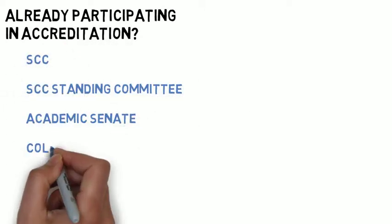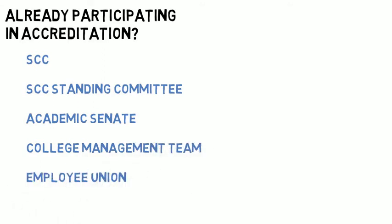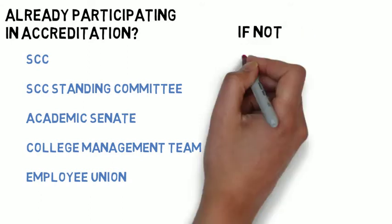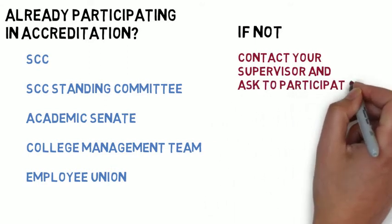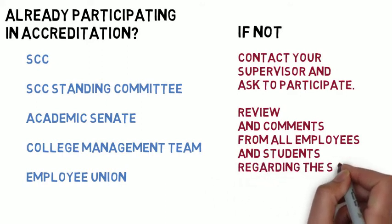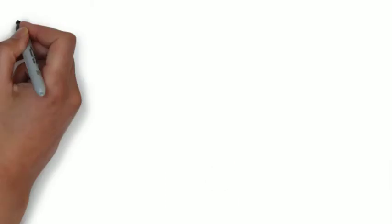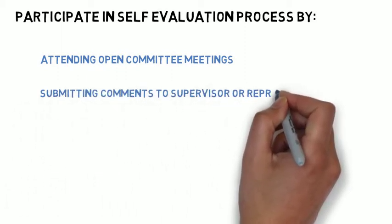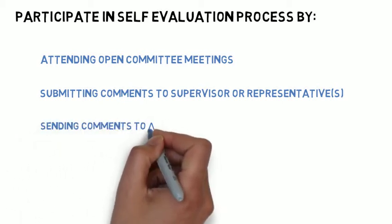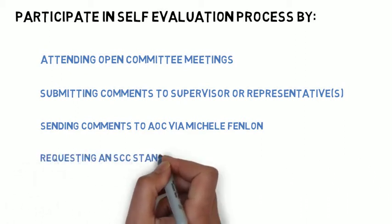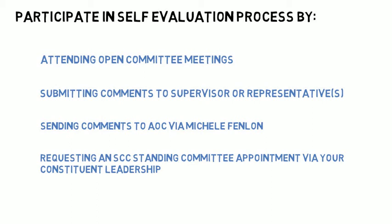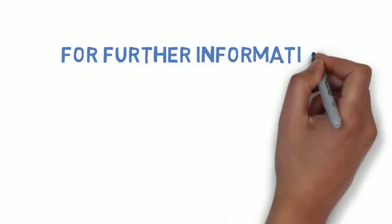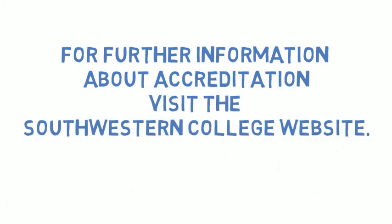If you are already on an institution-level committee like the SCC, one of its standing committees, the Academic Senate, the college management team, or an employee union, you may already be involved in the accreditation process. If you are not on a committee, you may contact your immediate supervisor to ask how to participate. You may also attend open committee meetings, submit comments via your supervisor or representative, sit on committees, send comments directly to the AOC through Michelle Fenlon, or request an SCC standing committee appointment through your representative constituent leadership. For further information, please visit the accreditation page on the Southwestern College website.